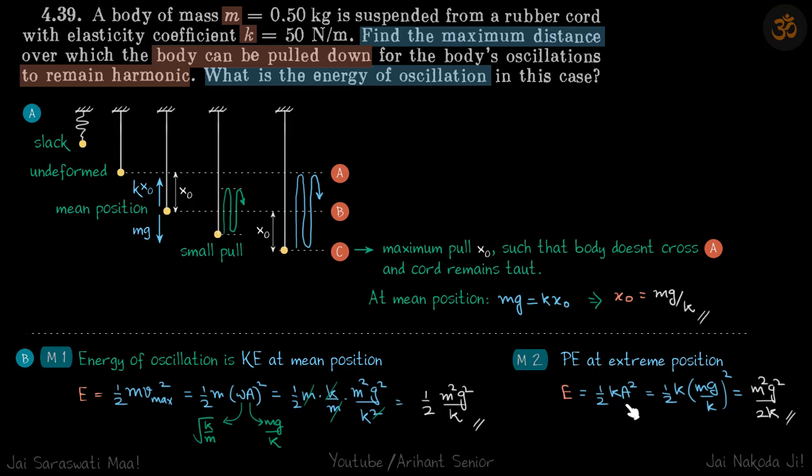In SHM the potential energy when we write as half k a square, a is not the extension of the spring. We are just talking about an SHM motion, we don't care what is the extension in the spring, we just need to see what is the amplitude of the SHM and amplitude of this SHM is x naught. Therefore, even though the actual extension in the spring at this point is 2x naught, our energy is still half k into a square where a is the amplitude. It has nothing to do with the extension of the spring.